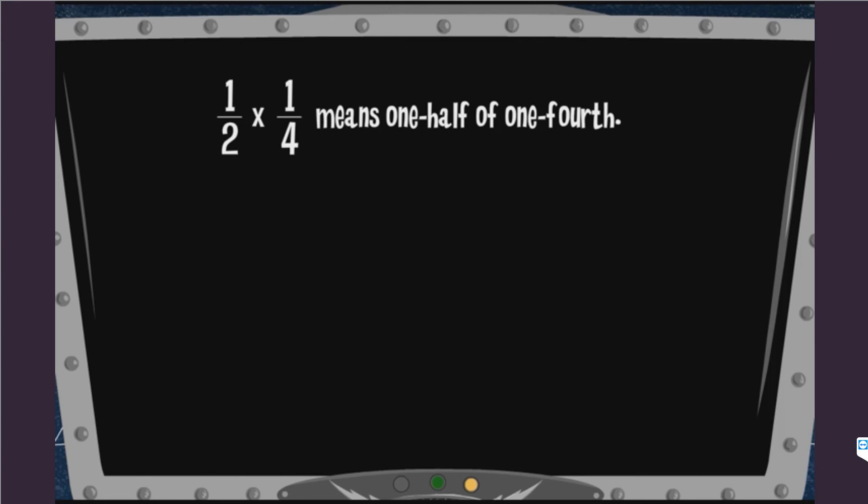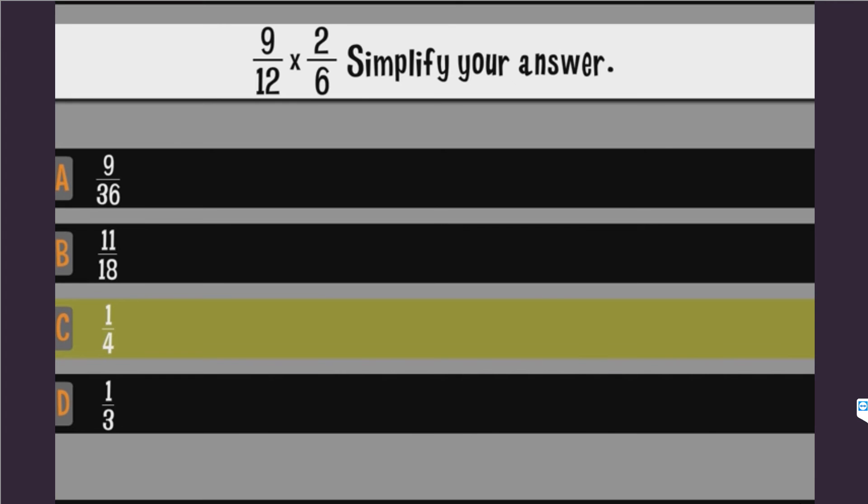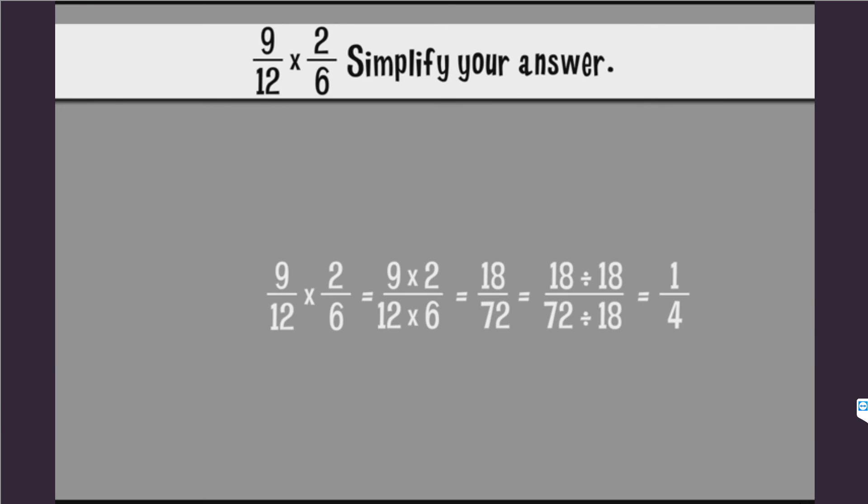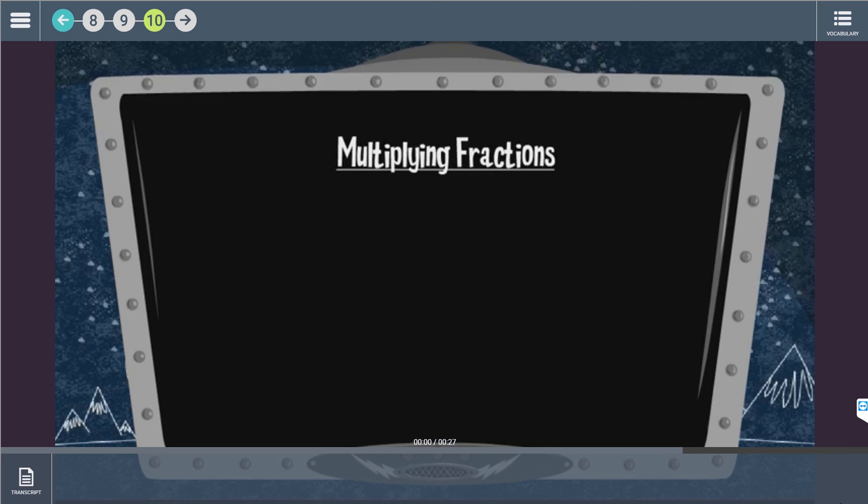Let's skip ahead to the recap at the end of the lesson. Solve 9 twelfths multiplied by 2 sixths. Simplify your answer. The correct answer is C. 9 twelfths multiplied by 2 sixths equals 1 fourth. The conclusion summarizes and reinforces the information that was presented in this lesson.